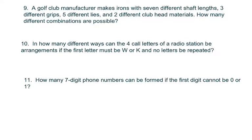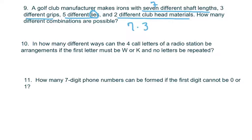A golf club manufacturer makes seven different shaft lengths, three different grips, five different lies, and two different club head materials. Using the counting principle: 7 × 3 × 5 × 2 = 210 ways.